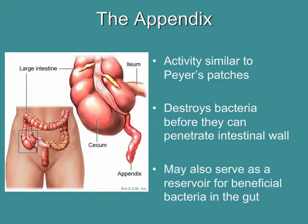The last of our mucosa-associated lymphatic tissues are found within the appendix — a little finger-like projection found at the beginning of the large intestine where it meets the small intestine. Its activity may be similar to that of the Peyer's patches — it's there to destroy pathogenic bacteria before they can perforate the intestine and enter the abdominal cavity. Another function for the appendix may be to serve as a reservoir of beneficial bacteria. During times of gastrointestinal illness such as diarrhea, a lot of good bacteria is washed out of the body. This little blind-end sac might be a reservoir for these beneficial bacteria so they can repopulate the large intestine once you become well again.